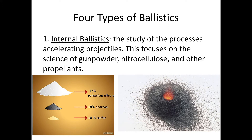There are four categories of ballistics. The first is internal ballistics — that's the cellular processes of accelerating projectiles. It focuses on the science of gunpowder and nitrocellulose and other propellants. You can see the recipe below for how to make gunpowder — it's not a complicated process, though it is a little bit dangerous. This would be the old-school gunpowder in its earliest form.